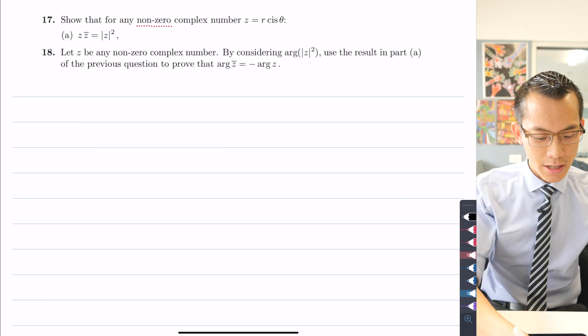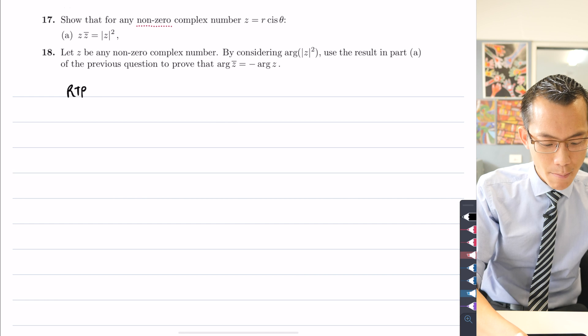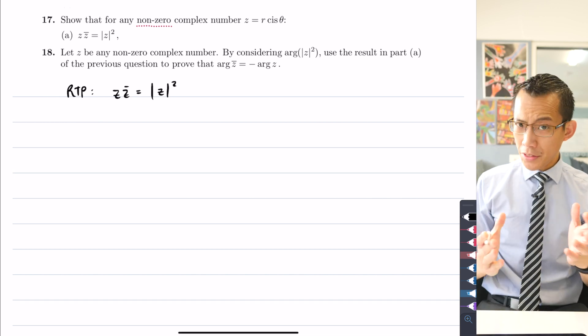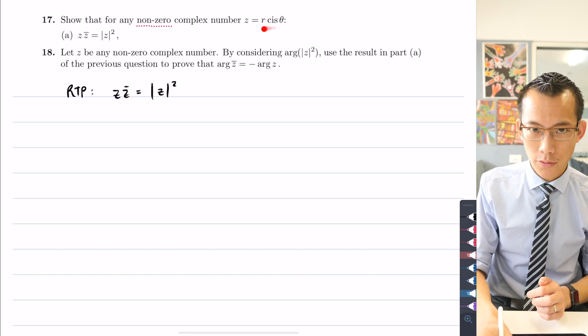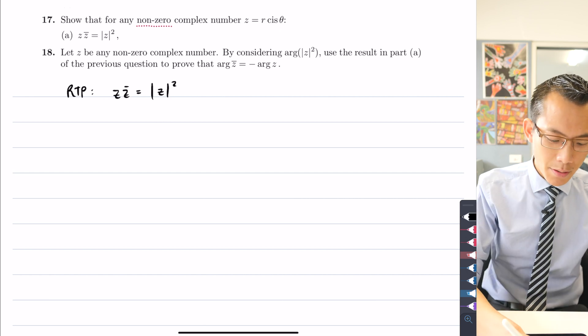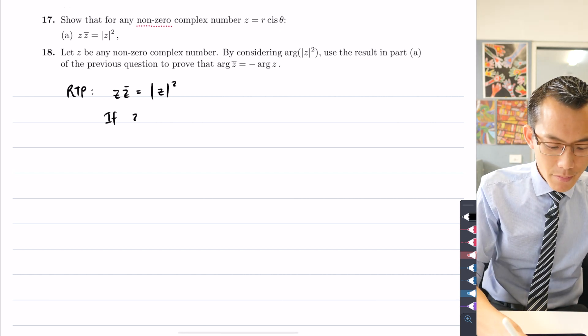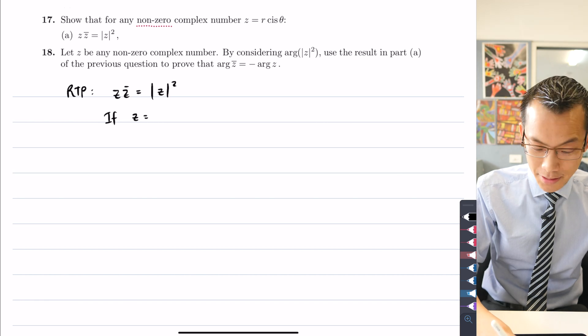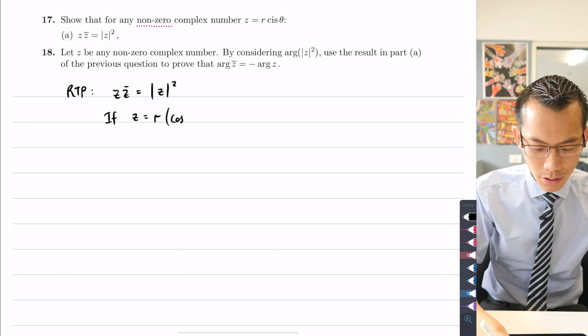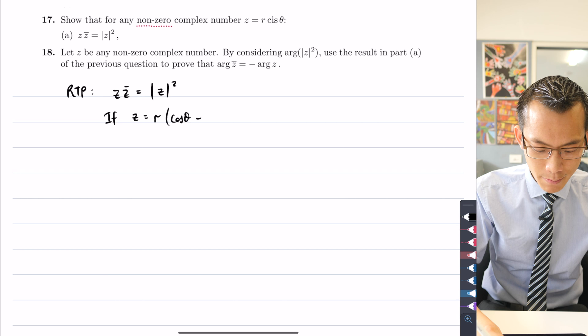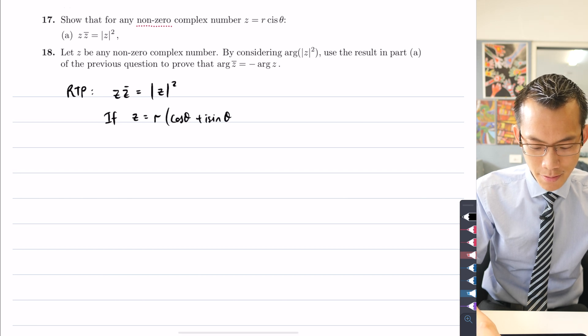Let's tuck into this result that we're required to prove. z times its conjugate equals the modulus of z all squared. What they're doing is saying define this in polar form and see what you can get. So I'm going to say if z equals some modulus r times cos some angle theta plus i sine some angle theta...